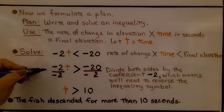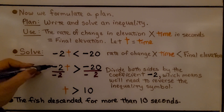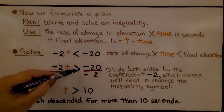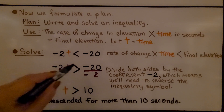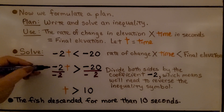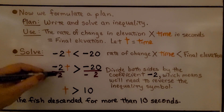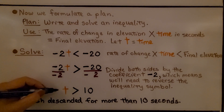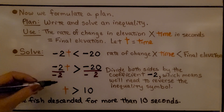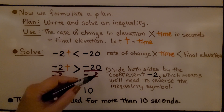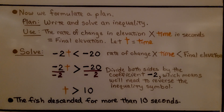We divide both sides by the coefficient negative 2, which means we need to reverse the inequality symbol. Dividing negative 2 by negative 2 gives us 1t, and negative 20 divided by negative 2 is positive 10. With the symbol reversed, we know the fish descended for more than 10 seconds.